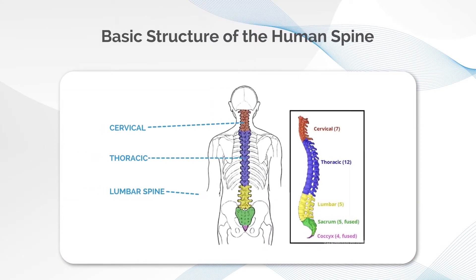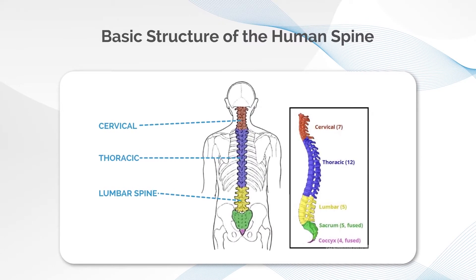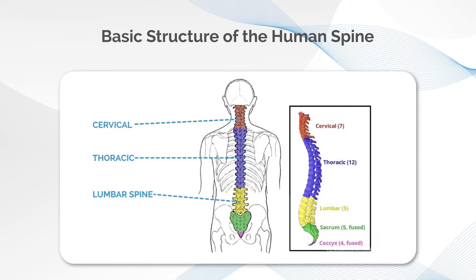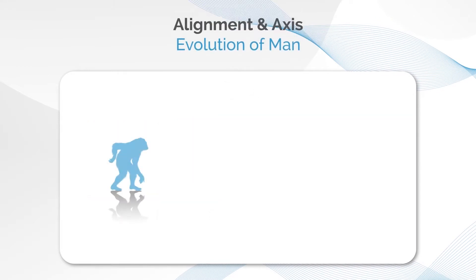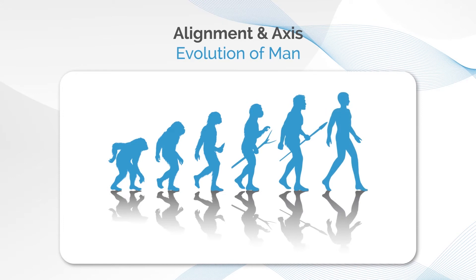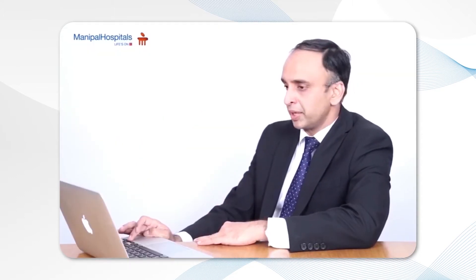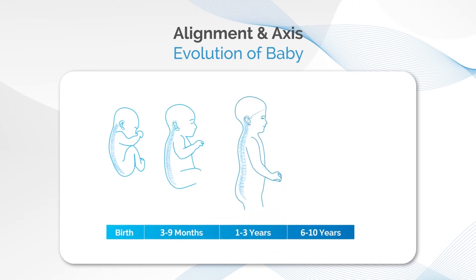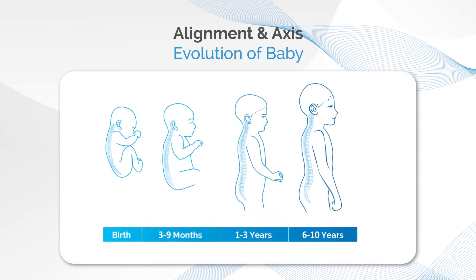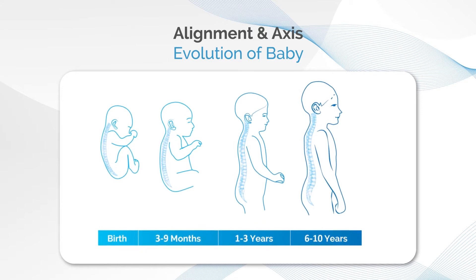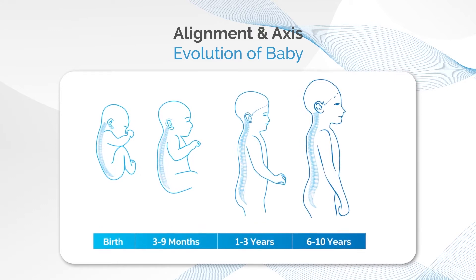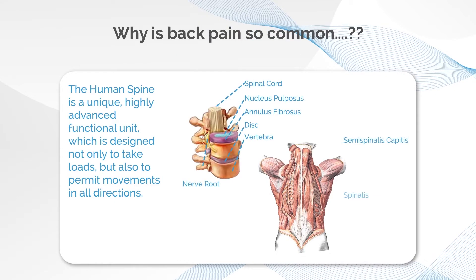The basic structure of the spine has a cervical spine which is the upper part, the thoracic spine which is the middle portion, and the lumbar spine. Man has been evolving for millions of years and evolution has made us upright creatures. As a result of this upright position we have a lot of load on the spine. As we grow from a child to an adult, our spine changes form and becomes a permanent structure designed not only to take loads but also to permit movements in all directions.